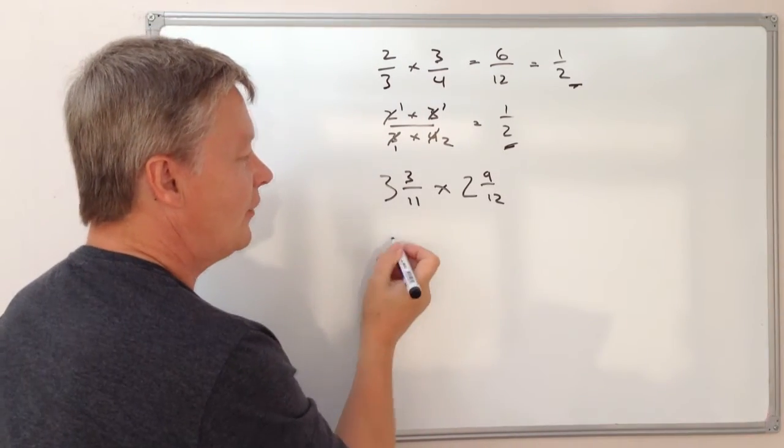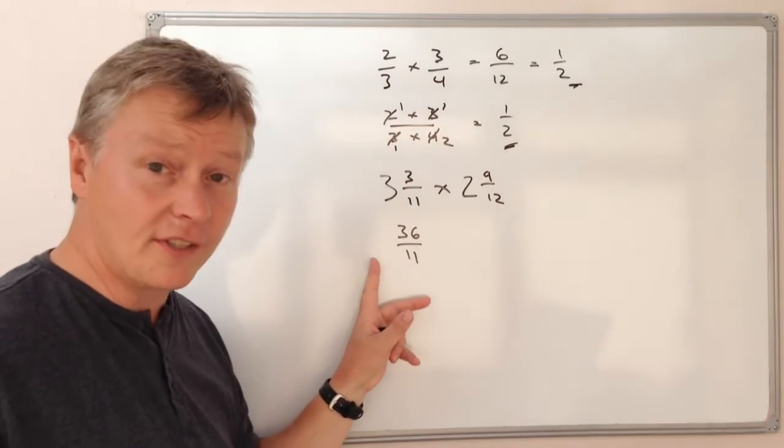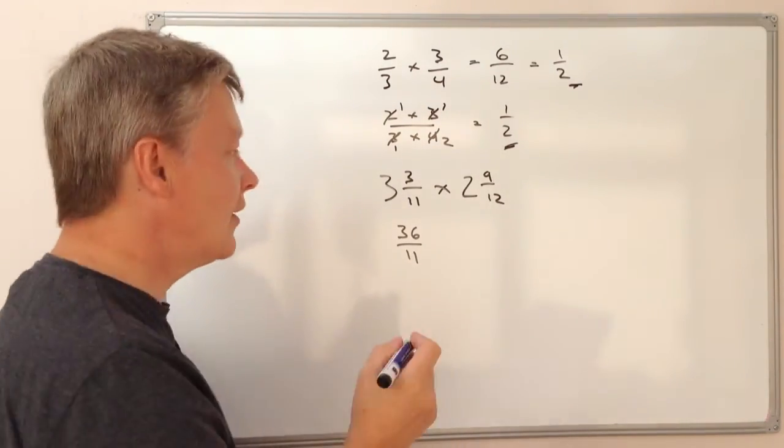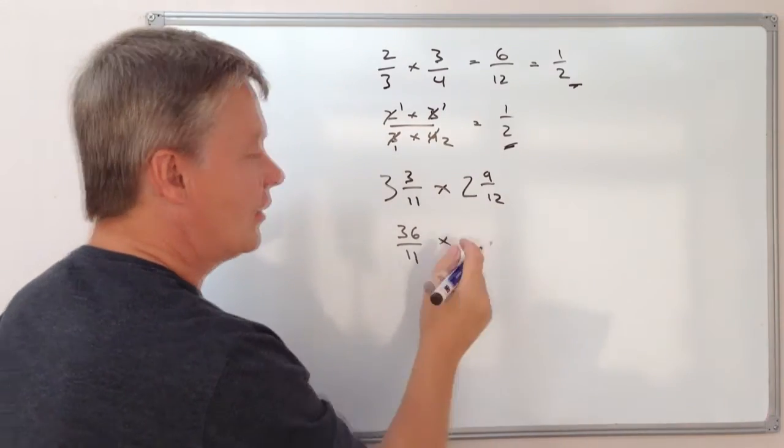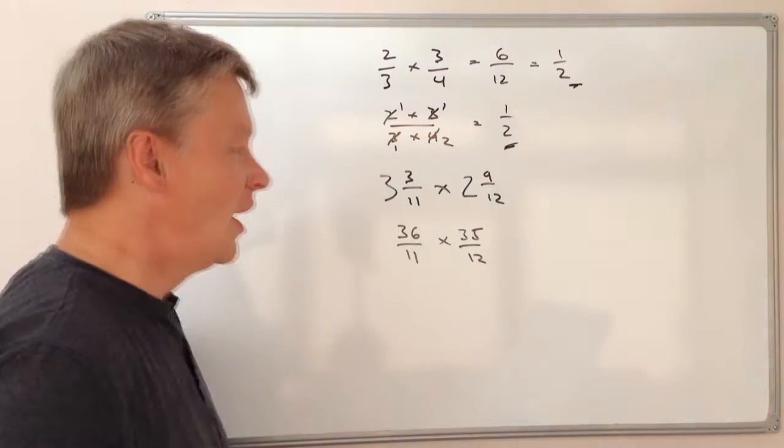So what I do is I convert that, and that's going to be 36 over 11. If you need to know how to do that, you need to have a look at some of the other videos. I'm going to multiply that also by converting that, and that's going to be 35 over 12.